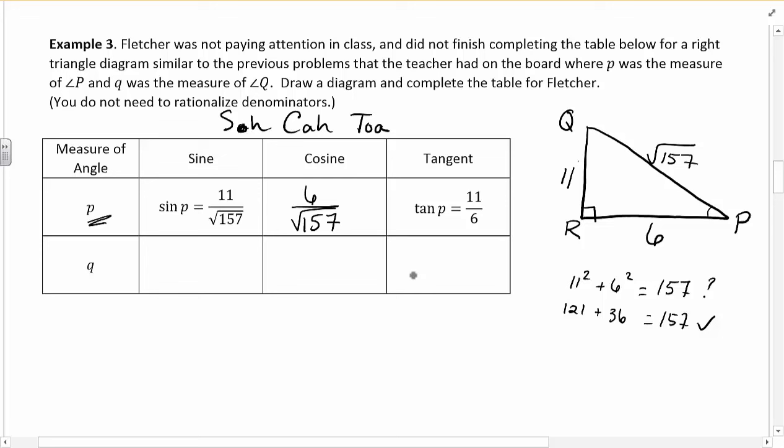And then for Q, we're going to go through and do the whole thing. So Q, sine, opposite Q divided by hypotenuse. Opposite Q, 6. Hypotenuse, still root 157. Q, cosine, adjacent over hypotenuse. Adjacent to Q, 11. Hypotenuse, still root 157. And then tangent, tangent of Q should be opposite over adjacent. So opposite Q, we're going to have a 6. And adjacent to Q, we're going to have an 11.